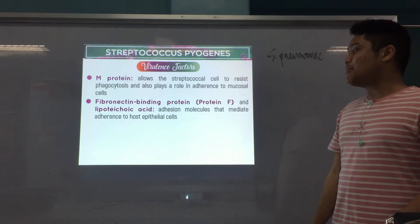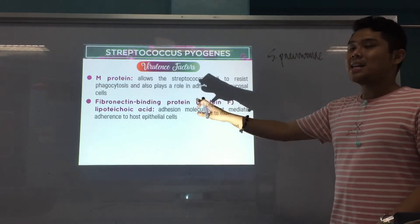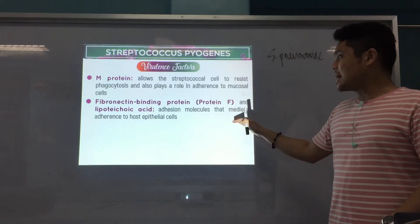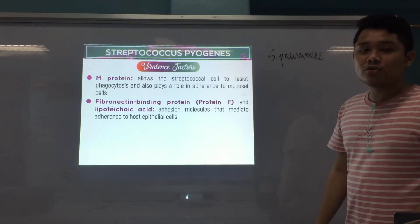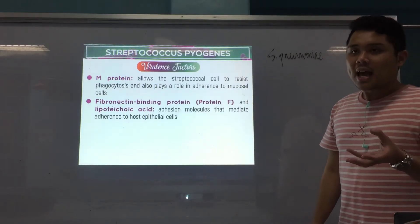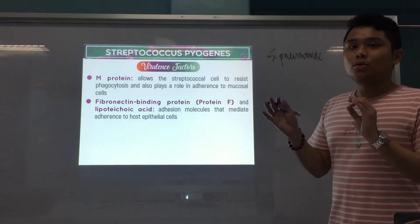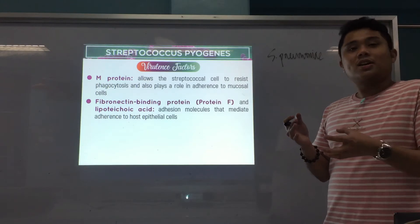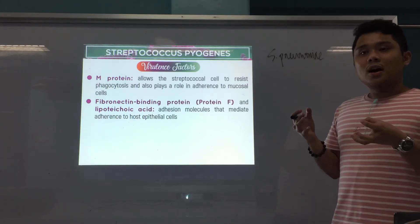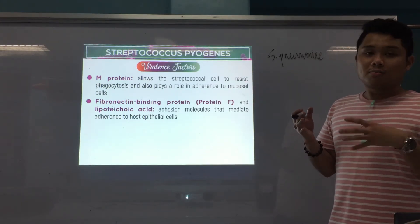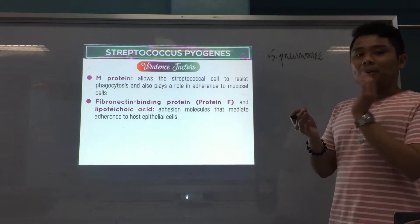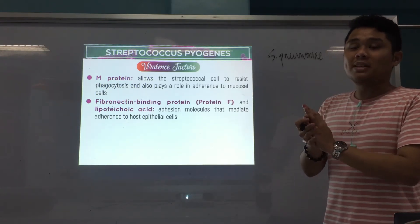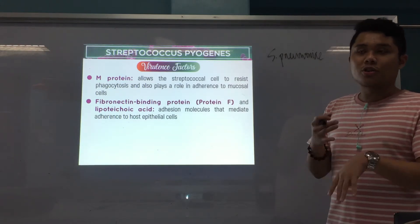Next are fibronectin-binding protein (Protein F) and lipoteichoic acid, which are adhesion molecules that mediate adherence to host epithelial cells. Because of these proteins, the bacteria attach more effectively to epithelial cells, allowing deeper invasion of tissues.